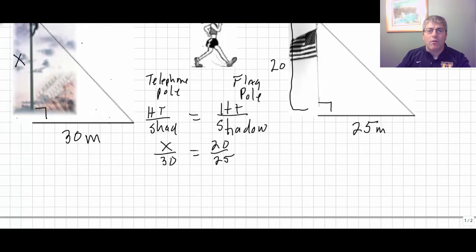So, in your haste you may want to multiply the means and extremes right away. But to make our arithmetic a little bit easier, don't we know that 20 is 4 times 5 and 25 is 5 times 5. So, we can simplify our fraction to 4 over 5. So, 4 over 5 is as x is to 30.